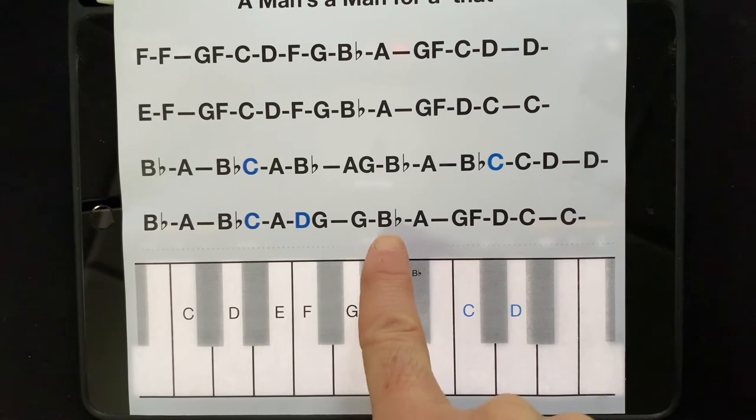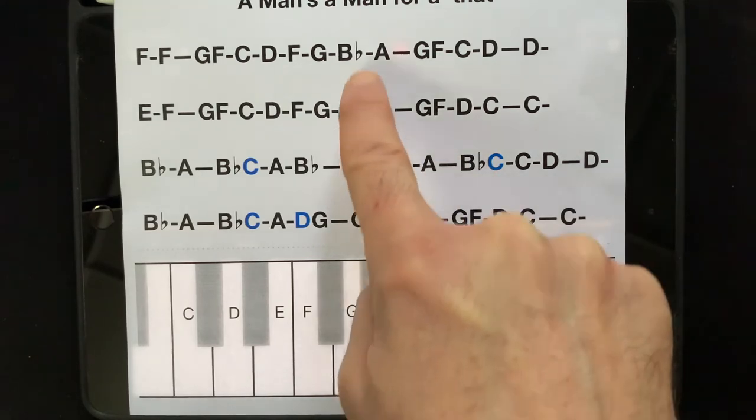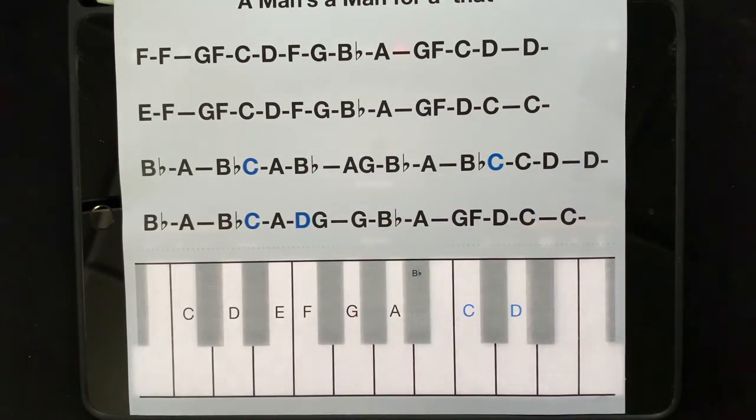But the other main difference is that we now have this note, a B with a flat sign. This sign here - this is called a flat sign. So you'll notice here that the B is missing, but instead of playing the B, we flatten it, which means we've taken it back one step to this note here. This black note is B flat. It does have another name, this note, but we'll come to that later. So instead of playing the B, we have to play the black note just before it, the B flat.